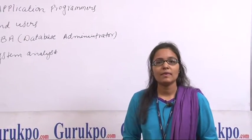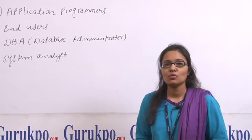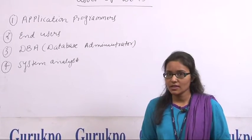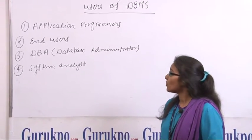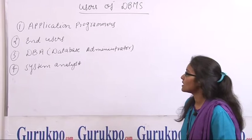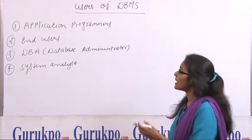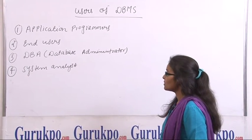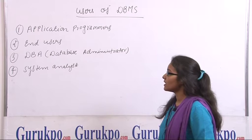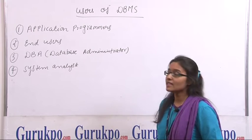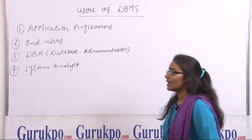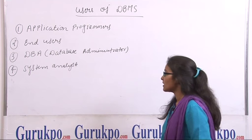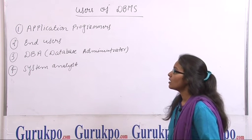As we all know, database management system is used to manage overall data of the system. There are four users of database management system. First one is application programmers and second one is end users. Third one is DBA, that is database administrator, and the fourth one is system analyst. Now, let us know one by one.